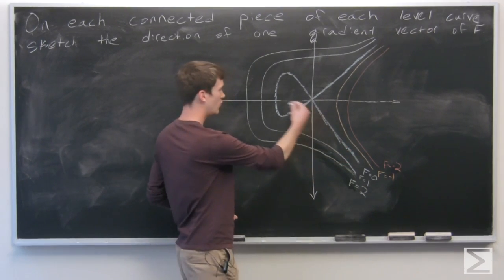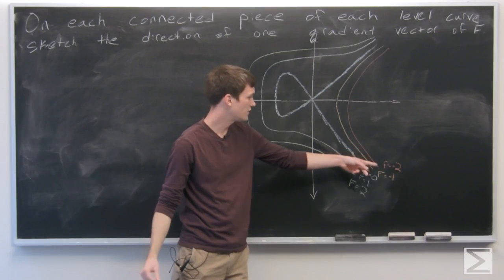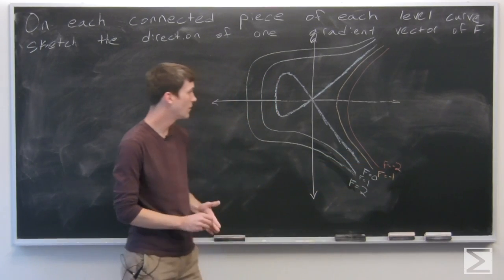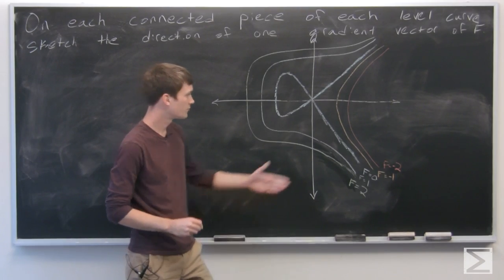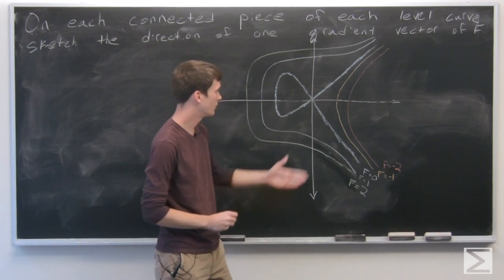So we know that we're going to be moving in the direction of increasing f, so from negative 2 to 2, and on each curve we want it to be perpendicular to the curve given.